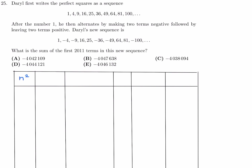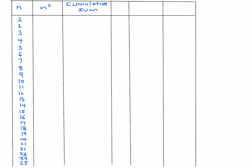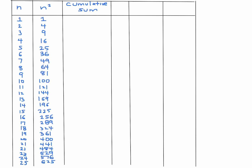We'll create a table with columns for n, n-squared, and cumulative sum. The sign pattern is: term 1 is positive, then two negative, two positive, two negative, two positive, and so on. Let's write out n and n-squared: 1, 4, 9, 16, 25, and so on. Then fill in the signs following that alternating pattern.